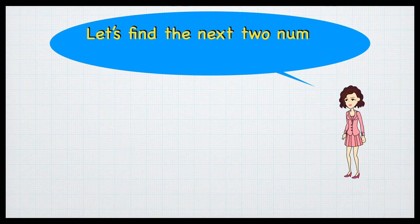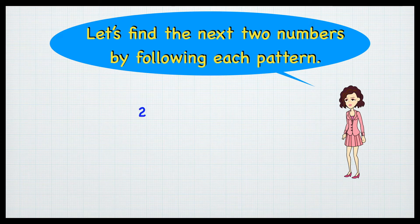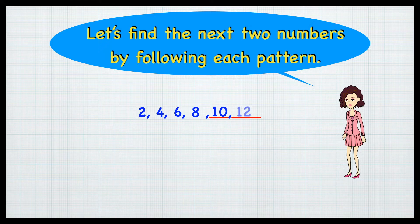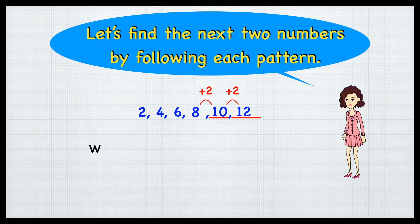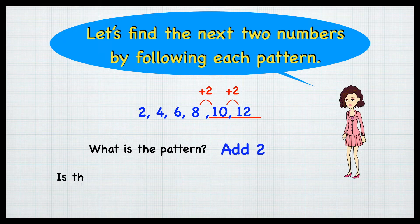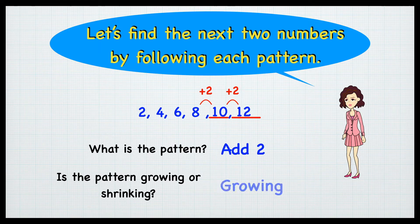Let's find the next two numbers by following each pattern. 2, 4, 6, 8, 10, 12. Plus 2, plus 2. What is the pattern? Add 2. Is the pattern growing or shrinking? Growing.